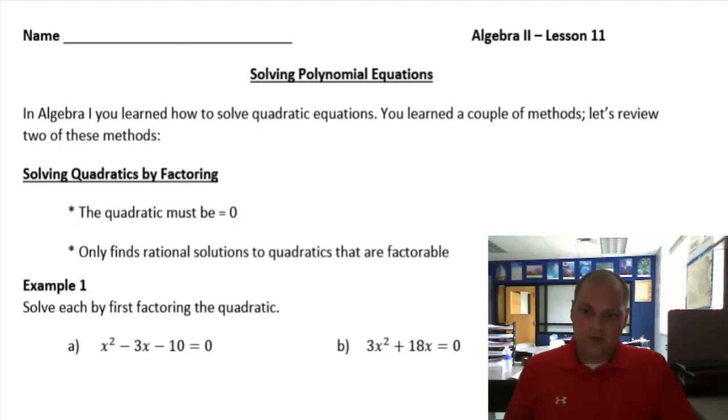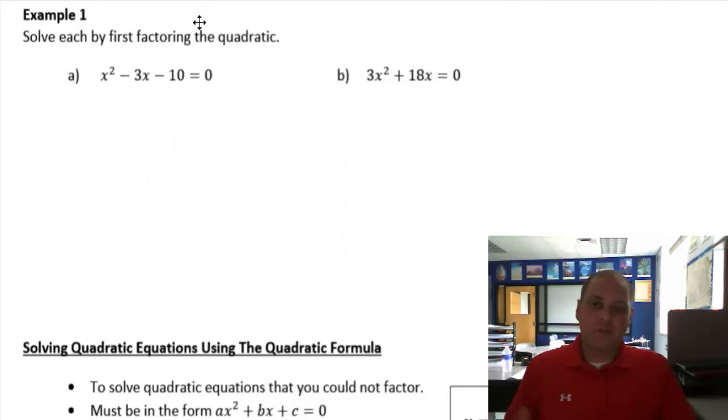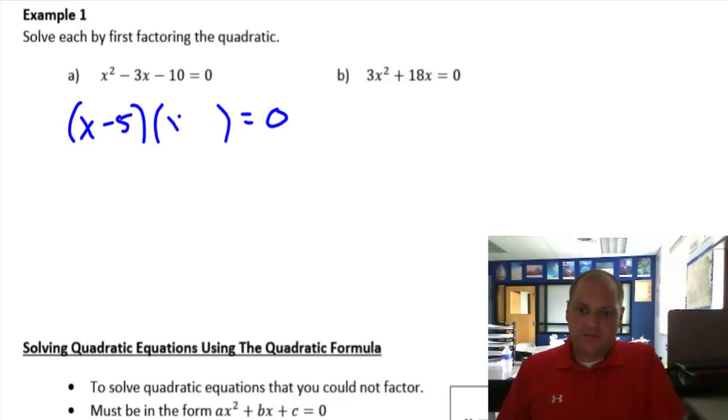We could use factoring or we could use the quadratic formula. We know many methods of factoring. We're just going to review a couple and show how this works. Solving a quadratic equation, this is an x squared equation. You would factor it to get your two binomials. x minus 5, x plus 2. Now you make the argument, I have a number, x minus 5, times another number, x plus 2, equals 0.